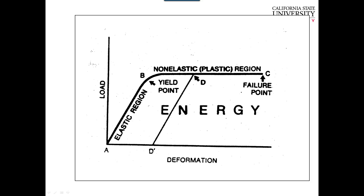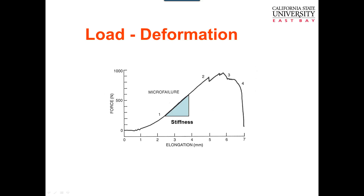Once we hit the yield point, we hit the point of no return and enter the plastic region, where there is some permanent deformation in the tissue. The beauty of biological tissue is that it can heal itself — typically if we go into the plastic region we get micro tears and micro cracks, then we rest and go back to the elastic region, unless we continue in the plastic region until failure. For a tendon or ligament, there's a period where it stretches and aligns its fibers, then a stiffer region, then micro tears start until finally you have failure.